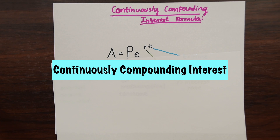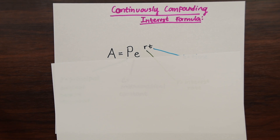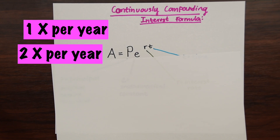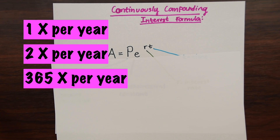So continuous compounding interest — let's talk about what this even means. What are we actually finding? Let's say we have $500 we want to invest. What if we compounded interest one time a year? We put $500 in the bank and every year we earn money on our principal. On that $500, let's say we earn 5% once a year. What if we earn 5% twice a year? What if they compounded interest one time every day — 365 times throughout the year?